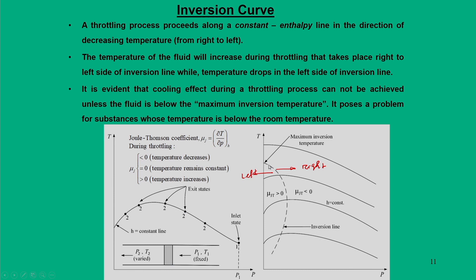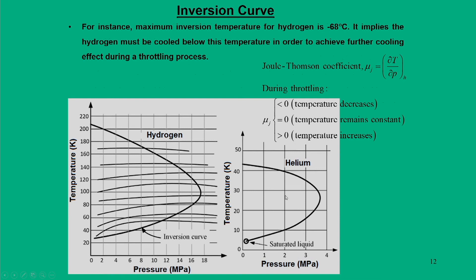It is also evident that the cooling effect during a throttling process cannot be achieved unless the fluid is below the inversion temperature. The topmost curve does not have a μ_J value equal to zero, meaning it does not have an inversion point. Starting from that initial state, we cannot reach the inversion line, and therefore cooling during throttling cannot be achieved.